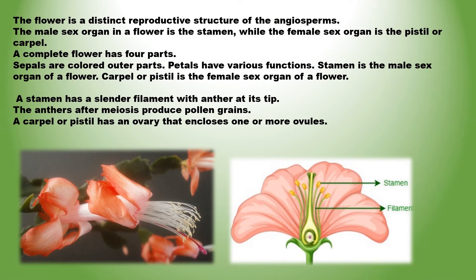The flower is a distinct reproductive structure of the angiosperms. The male sex organ in a flower is the stamen, while the female sex organ is the pistil or carpel. A complete flower has 4 parts: sepals are the colored outer parts; petals have various functions, the most important being to help in pollination; stamen is the male sex organ; and carpel or pistil is the female sex organ. A stamen has a slender filament with an anther at its tip. The anthers after meiosis produce pollen grains. A carpel or pistil has an ovary that encloses one or more ovules. Within an ovule is present a highly reduced gametophyte termed the embryo sac.